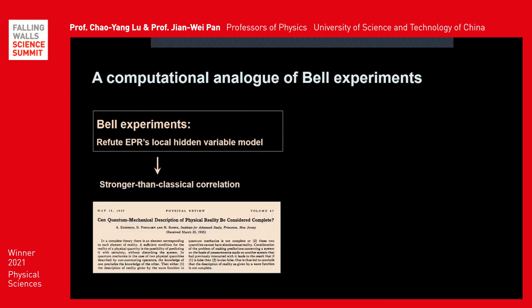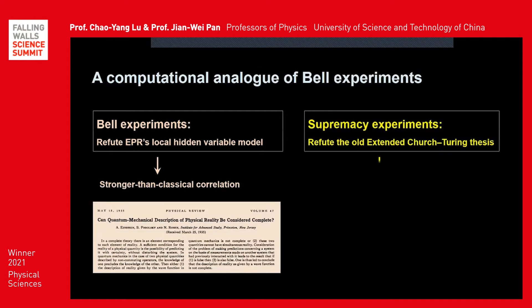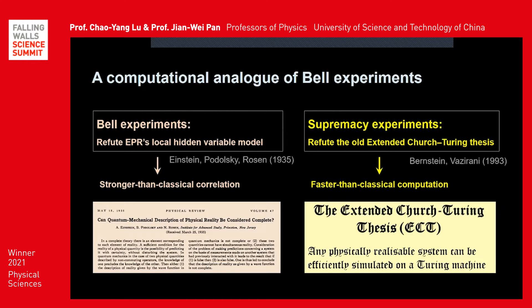It was a widely believed but unproven conjecture, so just like using the Bell experiments to refute Einstein's local hidden variable model and establish quantum entanglement as a valuable resource with stronger than classical correlation, quantum advantage experiments would refute the extended Church-Turing thesis and prove the potential of faster than classical computation using quantum mechanics.